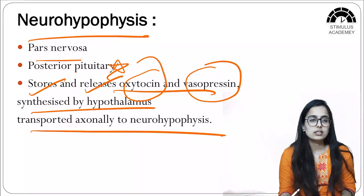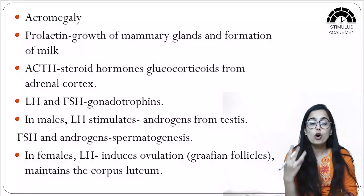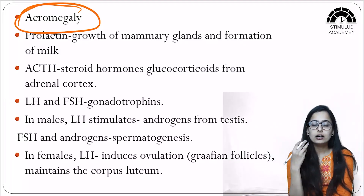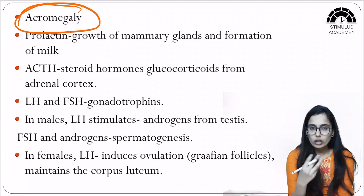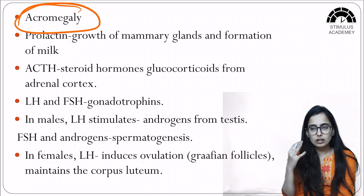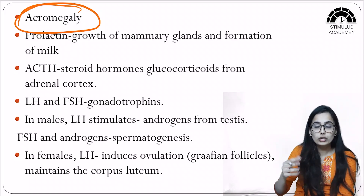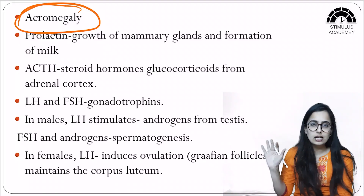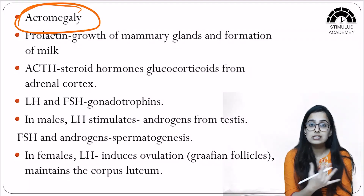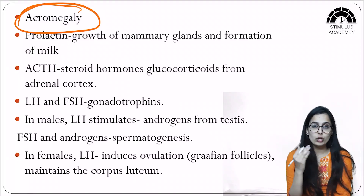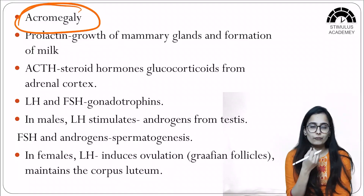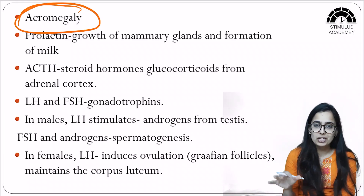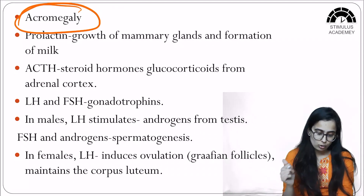Now let's discuss the hormones secreted by the pituitary. First, acromegaly: the anterior pituitary secretes growth hormone. Acromegaly occurs when there is a sudden surge in growth hormone in adults. If excess growth hormone occurs in children, it leads to gigantism; in adults, it leads to acromegaly, which is characterized by disfigurement of the face — the cheekbones and jaw bones protrude outward.